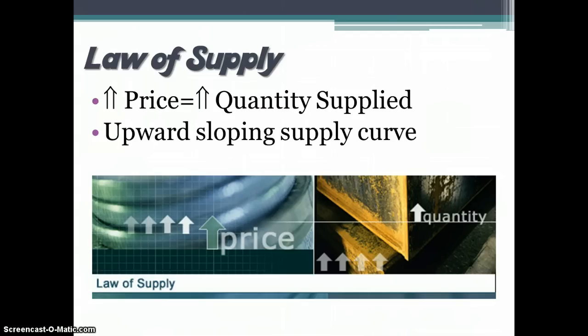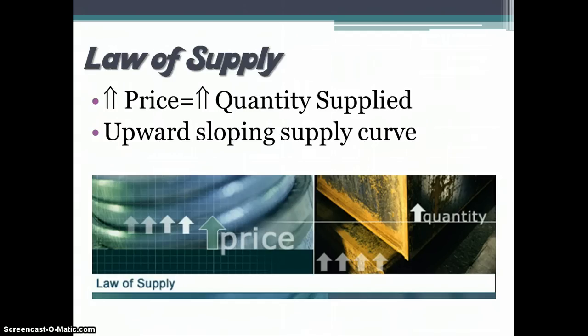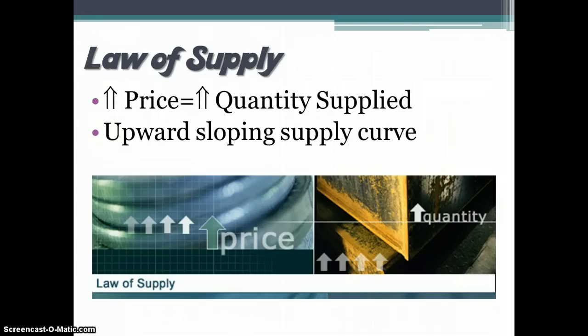Demand is downward sloping due to the law of demand, which tells us that as price rises, the quantity demanded falls. And the supply curve is upward sloping because as price rises, the quantity supplied will also increase.